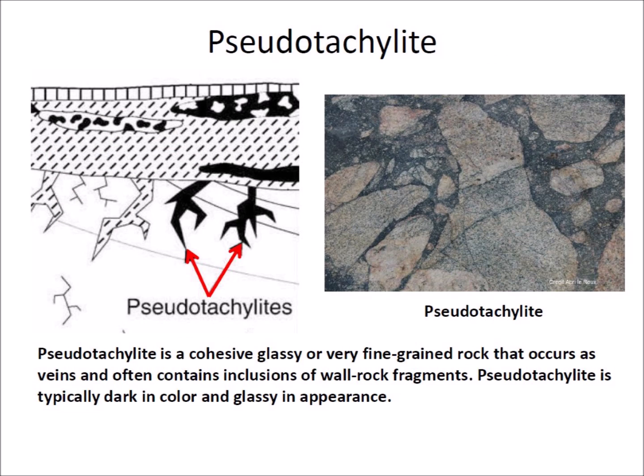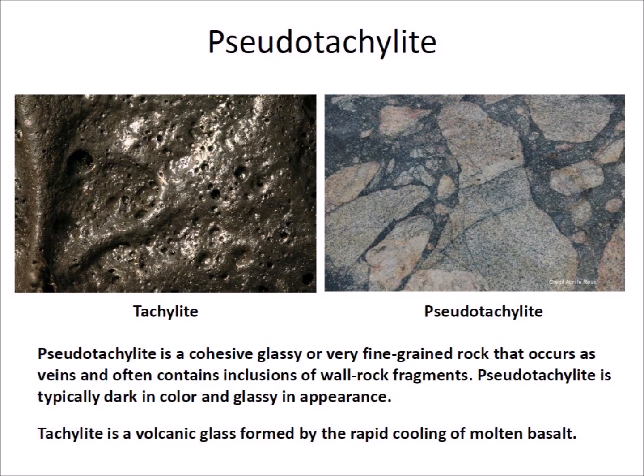Pseudotachylite is a cohesive glassy or very fine-grained rock that occurs as veins and often contains inclusions of wall rock fragments. It is typically dark in color and glassy in appearance. Pseudotachylite may form by frictional melting on faults in large-scale landslides or by impact processes. Pseudotachylite resembles tachylite, a volcanic glass formed by the rapid cooling of molten basalt.